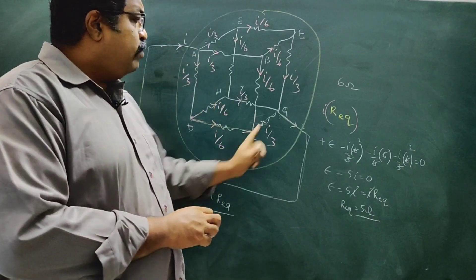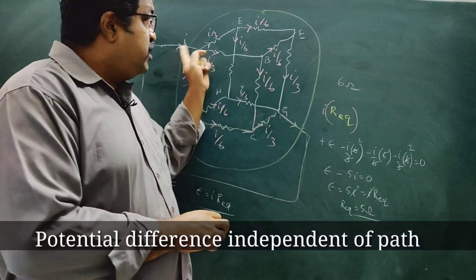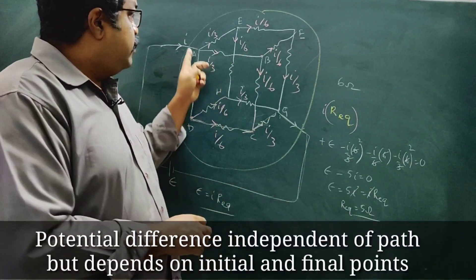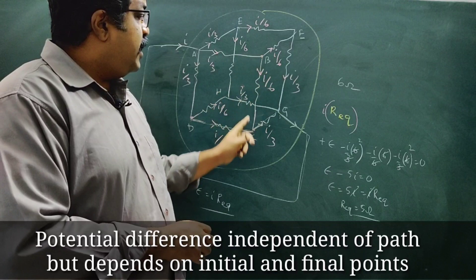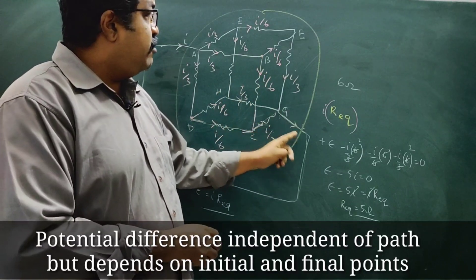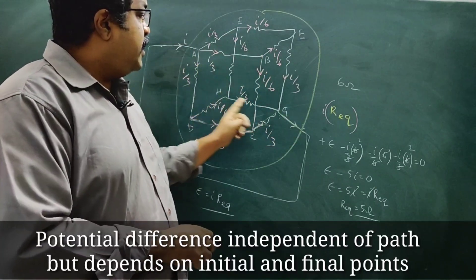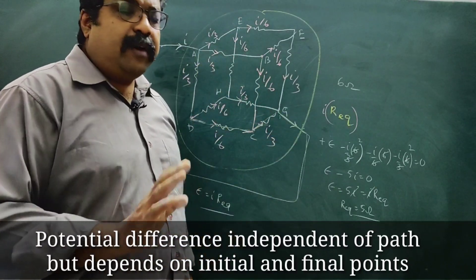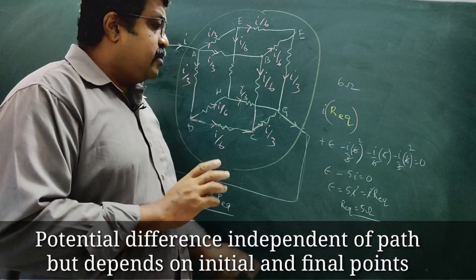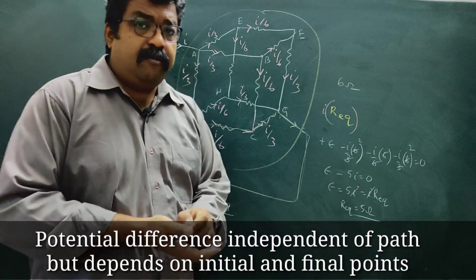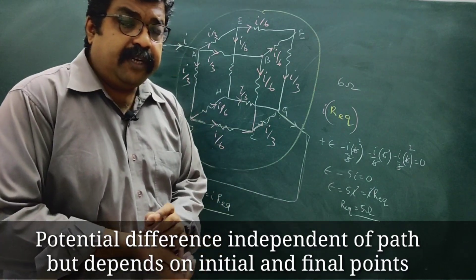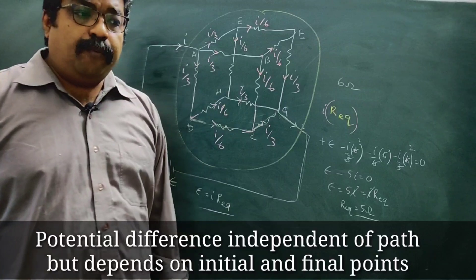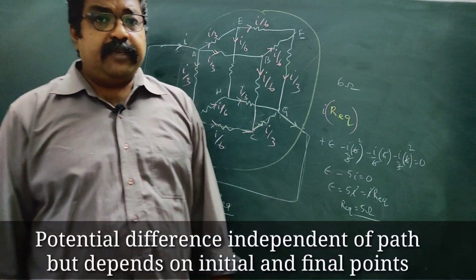Since E equals I into R equivalent equals 5I, the equivalent resistance is 5 ohm. If you take this path and solve it, you get the answer. The correct answer is 5 ohm.